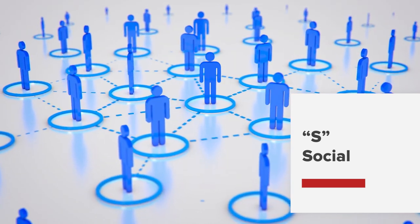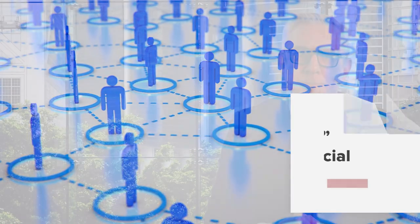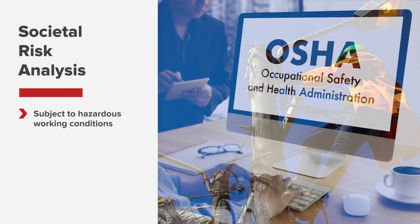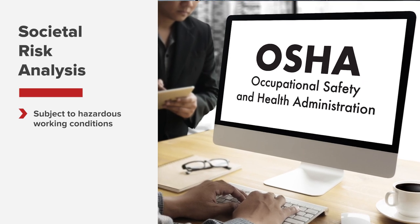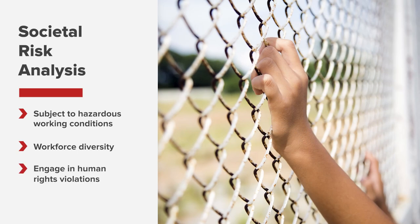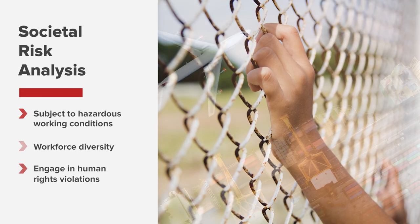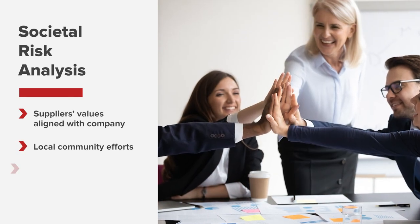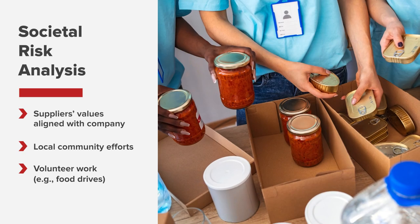When analyzing a company for social risks, or risks related to its business relationships, you may want to ask how it treats its internal and external customers. Are its employees, for example, subject to hazardous working conditions? Does it abide by the rules of the Occupational Safety and Health Administration's policies? Does it promote workforce diversity while maintaining a meritocracy? Has it engaged in any human rights violations? Do its suppliers mirror the company's values? Does it engage in profit sharing with local communities or inspire volunteers to work at, say, food drives? A government, agency, or corporation may have social projects as part of its ESG strategy.